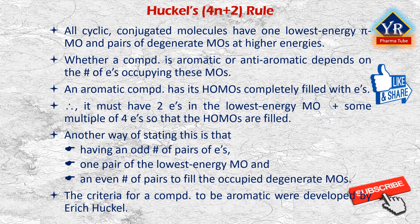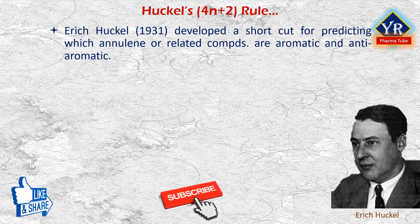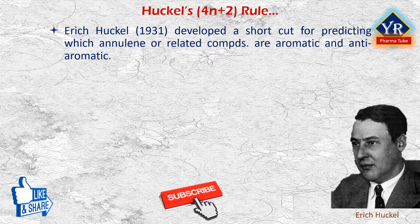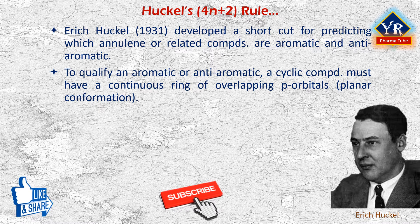The criteria for a compound to be aromatic were developed by Erich Hückel. In 1931, Hückel developed a shortcut for predicting which annulenes and related compounds are aromatic and which are anti-aromatic. An annulene is a monocyclic hydrocarbon with alternating single and double bonds, e.g. benzene, cyclobutadiene, cyclooctatetraene and so on. In using Hückel's rule, we must be certain that the compound under consideration meets the criteria for an aromatic or anti-aromatic system. To qualify, a cyclic compound must have a continuous ring of overlapping p orbitals, usually in a planar conformation.